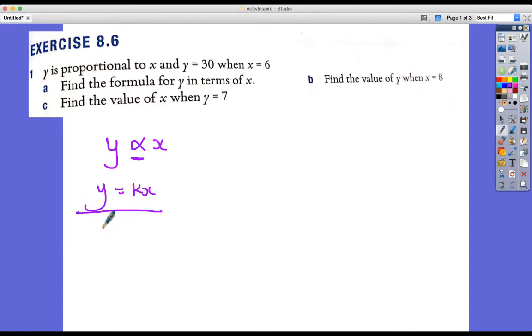So Y is 30 when X is 6. So 30 equals K times 6. We've taken that information so far and we've got to that formula. So actually in part A we've done it. We can say that 30 equals 6K.